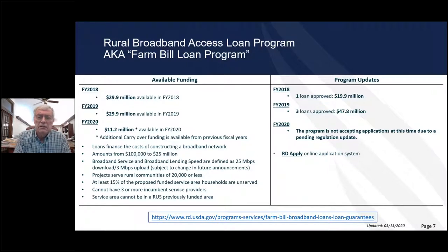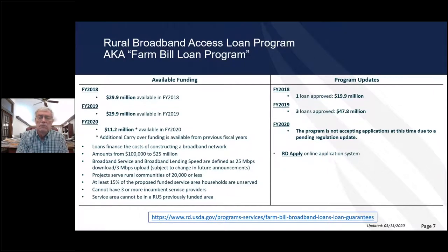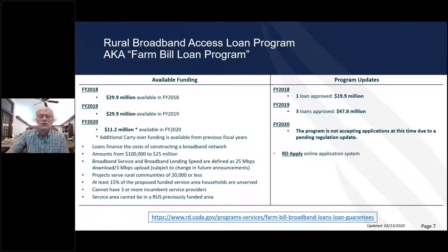The motivation is to provide services in a rural area where they'd been seeing a decrease in population — young people leaving, houses that can't be sold because there's no broadband. As they build out the system, they're putting out hotspots in rural areas. One employee went to check a hotspot and found cars parked there, with people driving as far as 20 miles one way so kids could do homework assignments. That program is called the Broadband Loan and Loan Guarantee Program, also known as the Farm Bill Program.